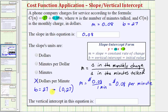And notice how there are two ways to express the vertical intercept. In this case, we can say the vertical intercept is 27, but sometimes you are asked to express the vertical intercept as an ordered pair, which would be 0 comma 27. I hope you found this helpful.